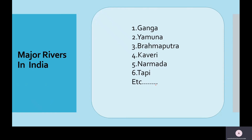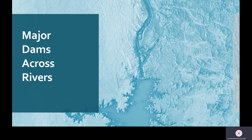On these major rivers we have constructed many dams. These dams provide storage for excess water accumulated during the rainy season, which we can use as a reservoir during summer when there is no rainfall. Various power generation projects are also built on dams, fulfilling the electricity needs of the nation. So these dams are multi-purpose.